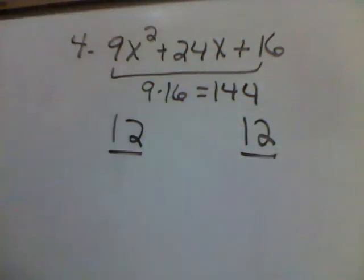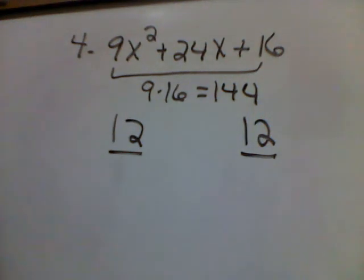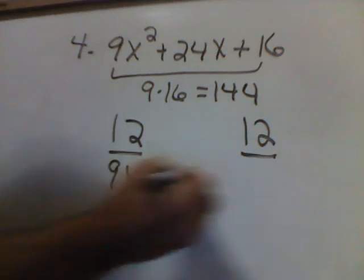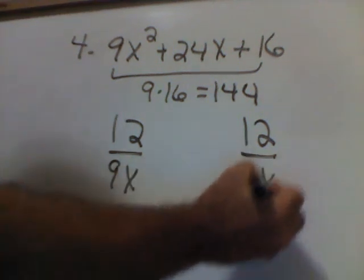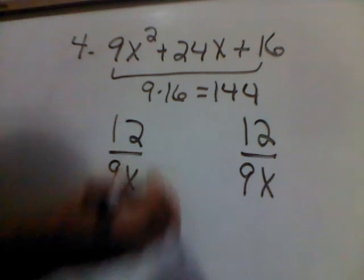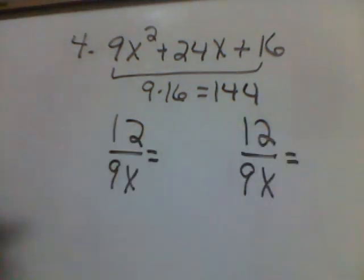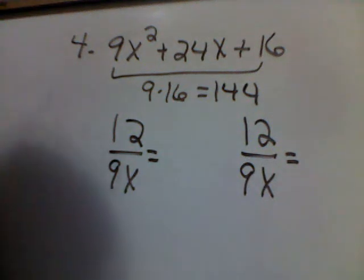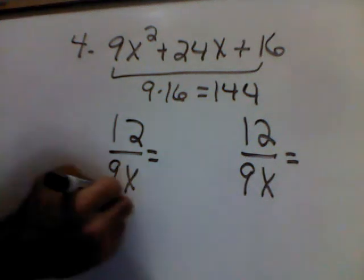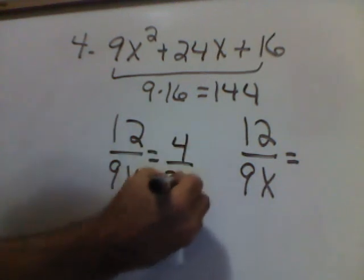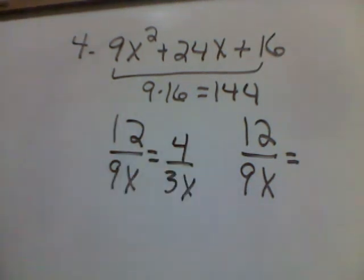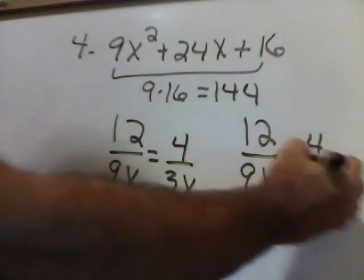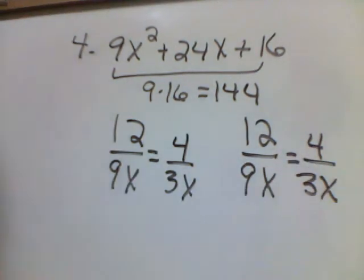Now, both positive, like the middle number. Okay, divide them both by the first number and the variable, which gives me a 9x here and a 9x there. Now, we're going to reduce both fractions. 12 and 9, both have a 3 in them. So, dividing out the 3's gives me a 4 over 3x. Same thing here. Take out the 3's, giving you a 4 over 3x.